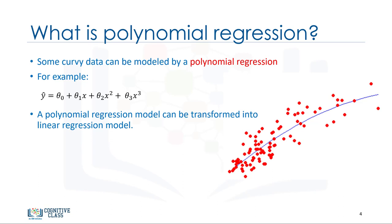I know it's a bit confusing, but let's look at an example. Given the third degree polynomial equation, by defining x1 equals x and x2 equals x squared or x to the power of 2 and so on. The model is converted to a simple linear regression with new variables as y hat equals theta 0 plus theta 1x1 plus theta 2x2 plus theta 3x3. This model is linear in the parameters to be estimated, right? Therefore, this polynomial regression is considered to be a special case of traditional multiple linear regression.